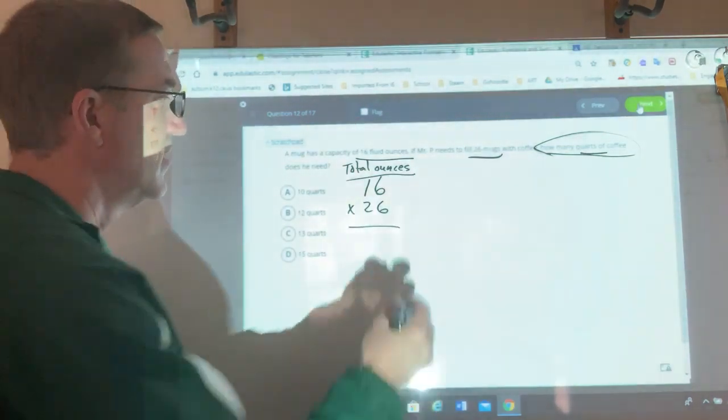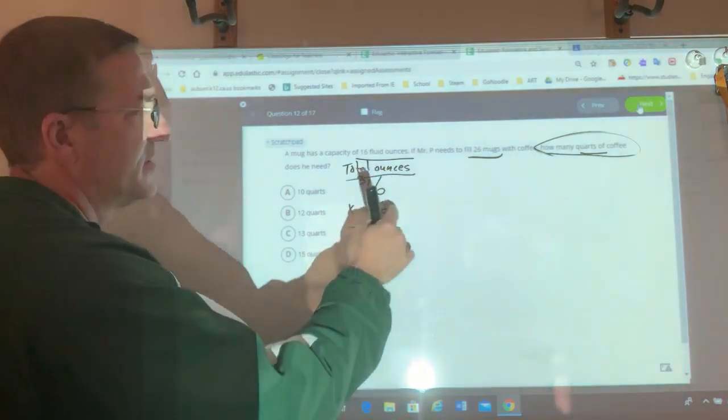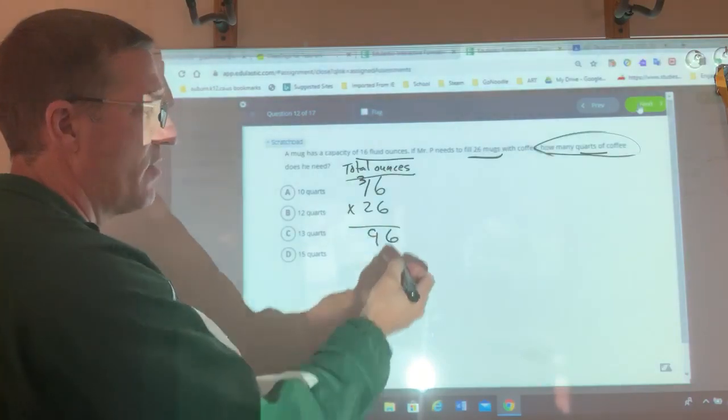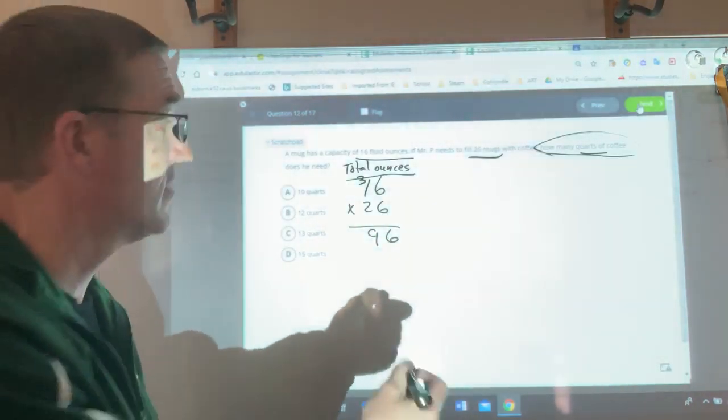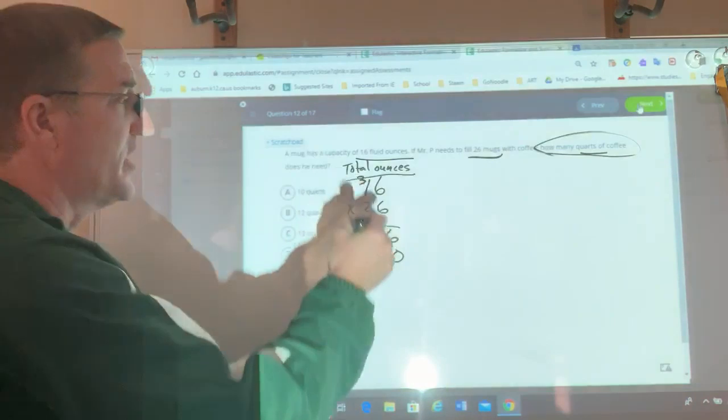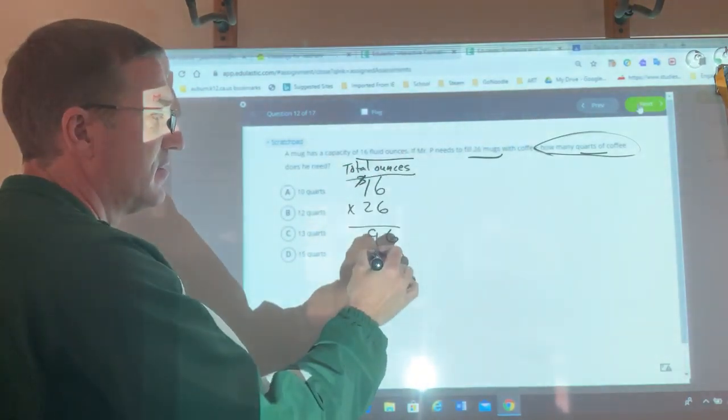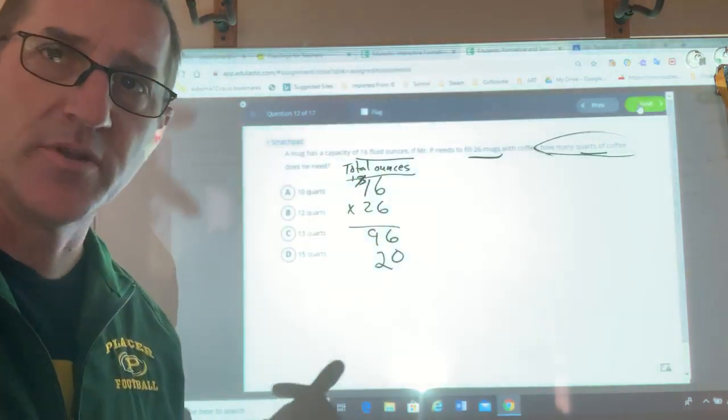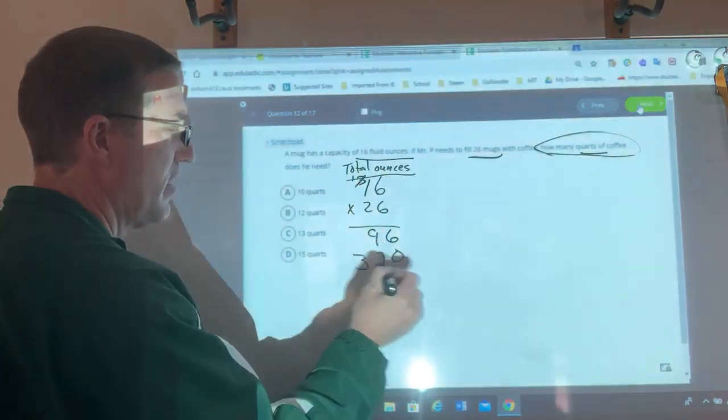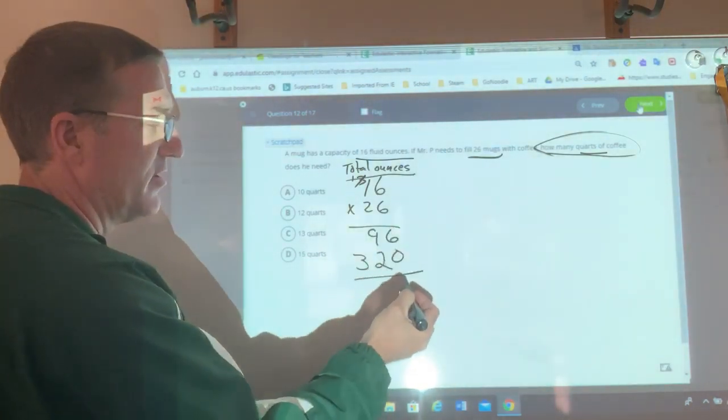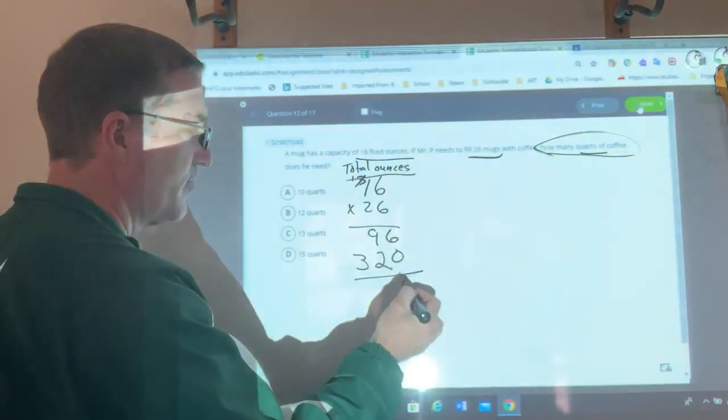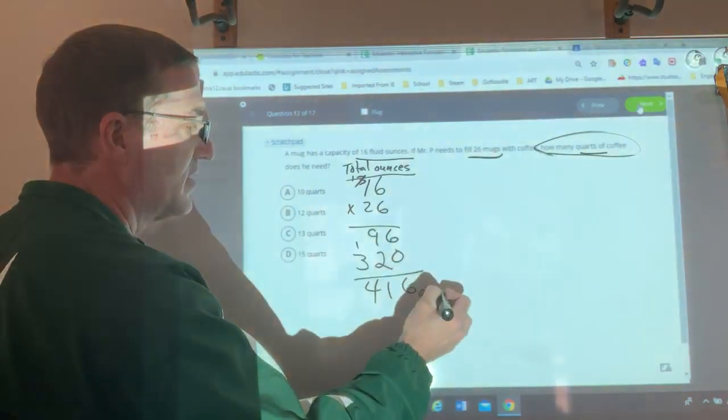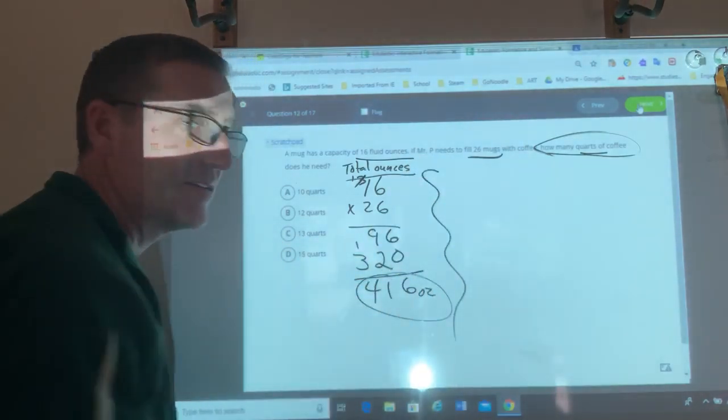Alright, 6 times 6. You got that 36, right? 6 times 1 is 6 plus 3 is 9. I get my 96. What do I put here? Just like always, I'm going to put a 0 because that's 20, not 2. 2 times 6 is 12, right? Cross that 3 out. Put the 1 up. 2 times 1. 2 plus 1, 3. So that's my first step.